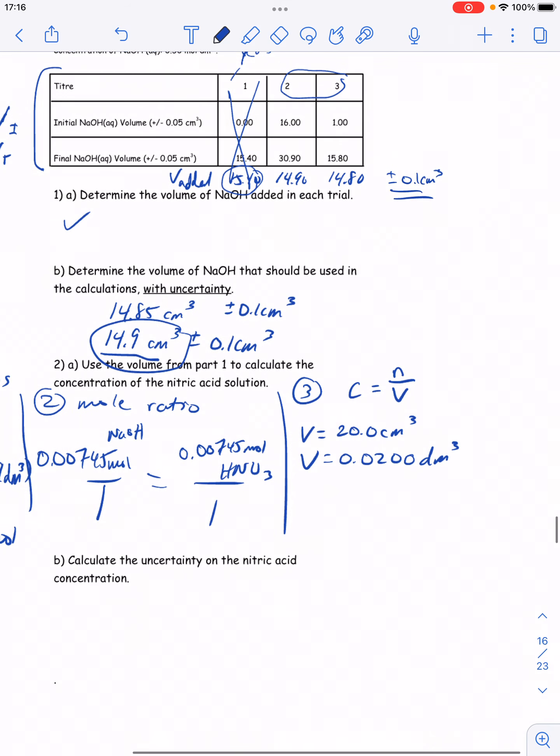And now I've got the moles I need. So I'm going to take my 0.00745 moles of HNO3. The volume that that moles was in was the 0.0200 dm cubed that I measured initially. And if I do that division...